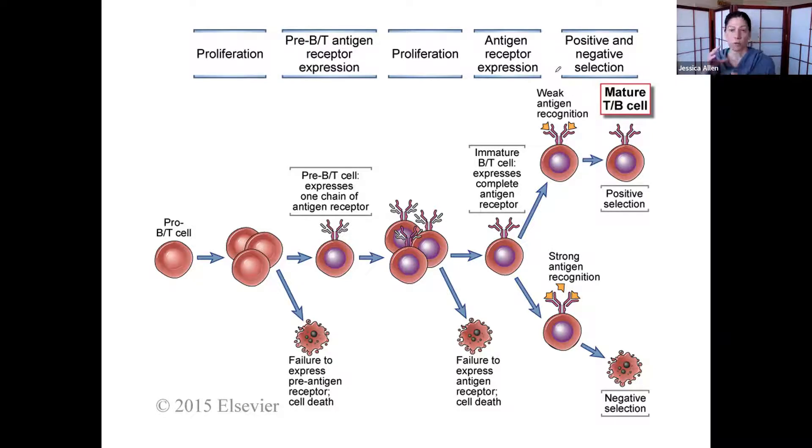Because of this whole process of going into the DNA, cutting and pasting, there are a lot of places where things can go wrong. So there are a lot of checkpoints in between each of these steps so that we make sure that we have B cells and T cells that are functional and are not going to activate against ourselves and cause autoimmunity.